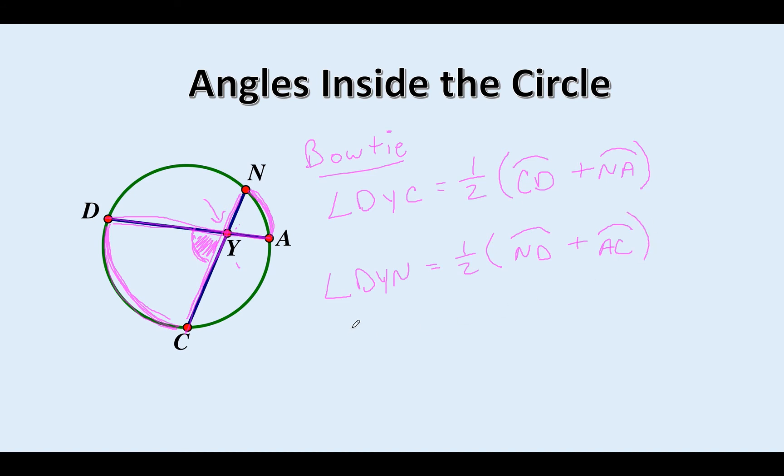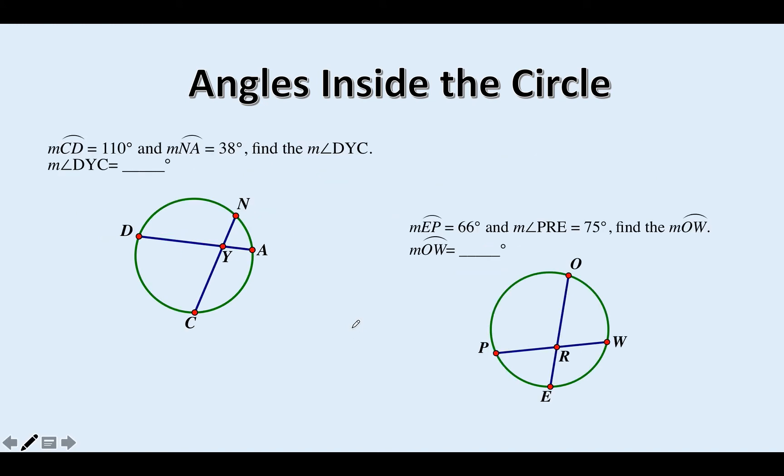Let's try some problems here. Hit pause, see what you come up with. I would recommend drawing the bow ties. We're looking for DYC, we're looking for this guy here. I'm going to use the bow tie that makes that angle. Remember what we said: angle DYC is equal to one half the two arcs added together, DC plus NA. So if NA is 38 and DC is 110, angle DYC is equal to one half of 110 plus 38, 148. So angle DYC is equal to one half of 148, which is equal to 74. That looks like a 74 degree angle.